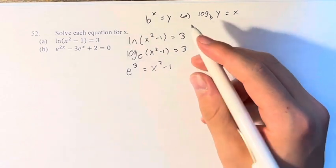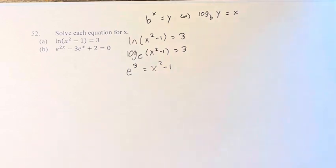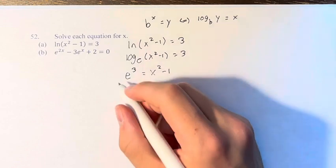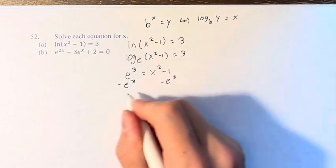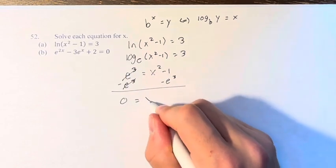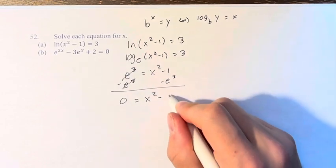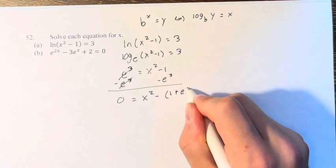We can add 1 to both sides, or maybe it'll be easier to subtract e cubed. Just to demonstrate something. 0 equals x squared minus, we are subtracting 1 and we're subtracting e cubed.